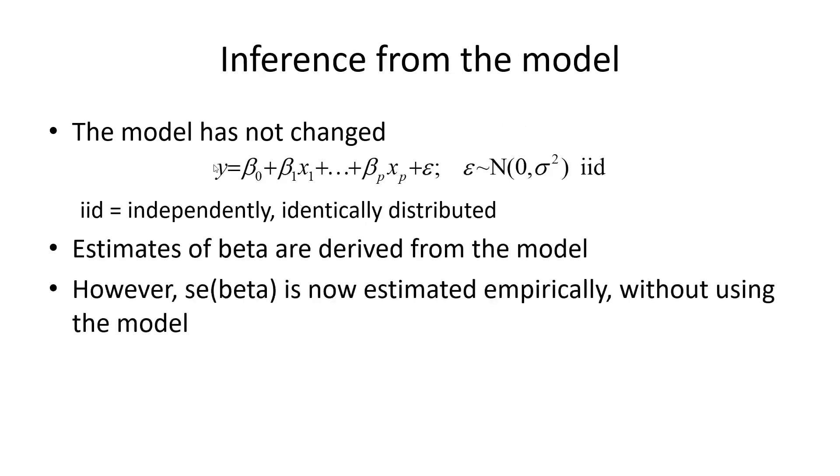The model has not changed. It's the same model. Still with the sigma squared in here, iid. And we use this model to derive the estimator of beta. It's just the standard error that we now derive empirically. And the standard error uses something else here. But for beta, this is just still the same model.